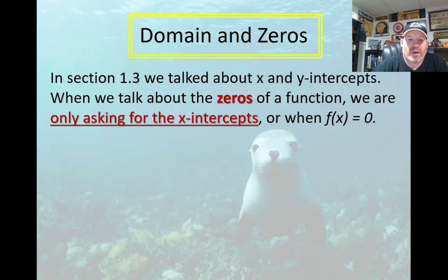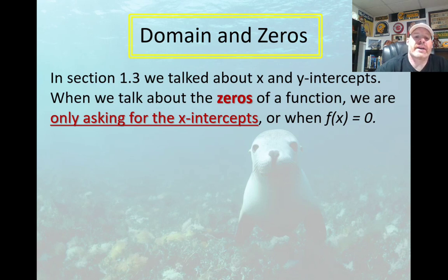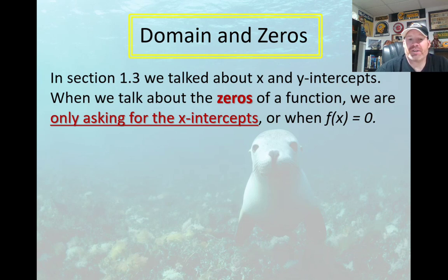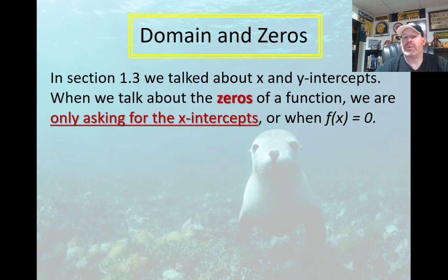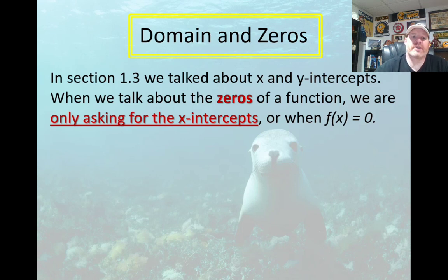One last note: in section 1.3 we talked about x and y intercepts. When we talk about the zeros of a function, we're only talking about the x-intercepts. So if they ask you specifically for the intercepts, they want both the x and the y. If they ask you just for the zeros of a function, then all they want is the x-intercepts.